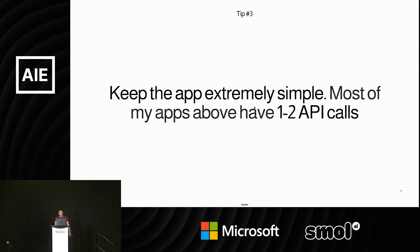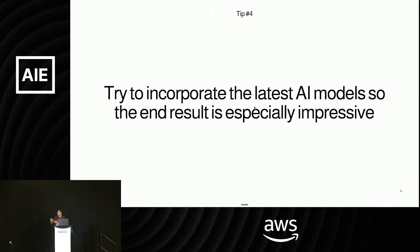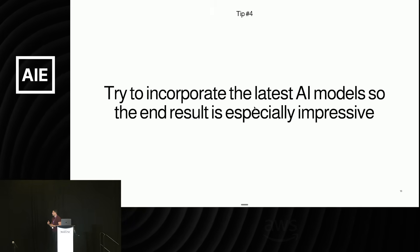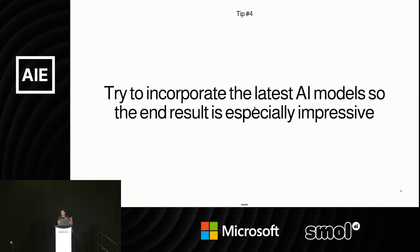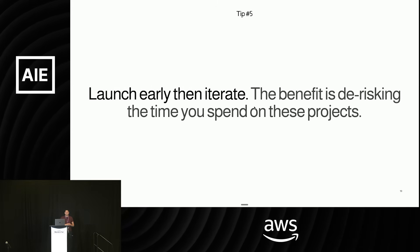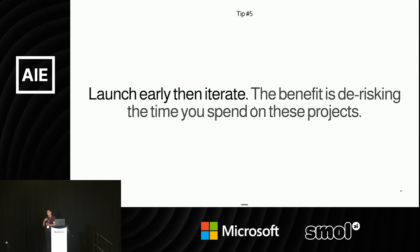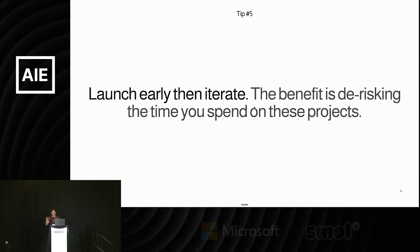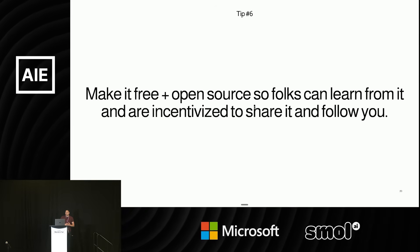Tip three: keep the app simple. Most of my apps have only one or two API calls. Tip four: try to incorporate the latest AI models. A lot of these apps have used the latest models — like Blink Shot, the real-time image generation app that used a model called Flux Schnell. I launched that app two days after the model came out, so it was one of the first apps that leveraged that new really fast model. Doing that increases the potential for virality. Tip five: launch early and then iterate. Even 40 apps in, I still have no idea what will do well versus what won't, and the only way to de-risk this is to simplify your project and launch early.